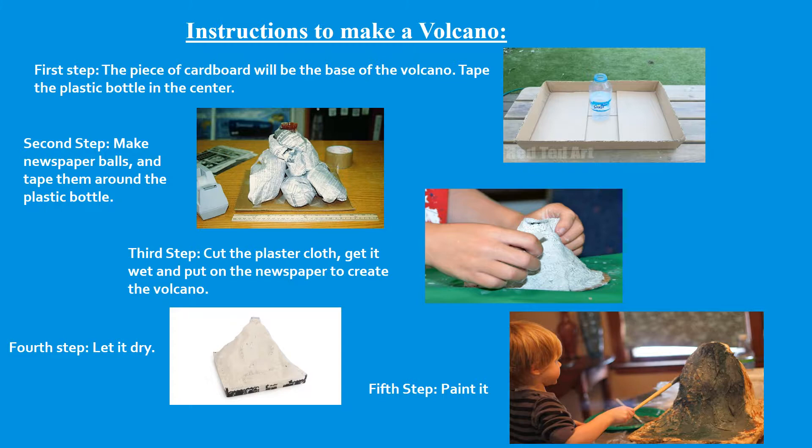For the third step, you want to cut the plaster cloth and get it nice and wet. Put it not only on the newspaper, but around the bottle as well. Now that you're finished with that, you want to let it dry.